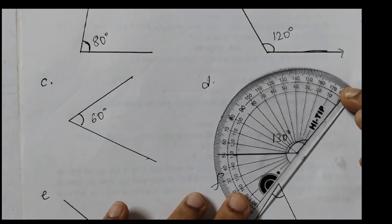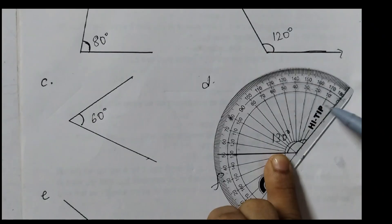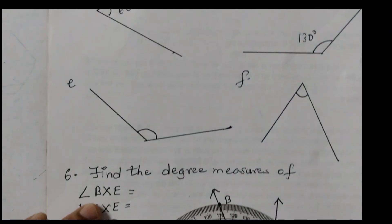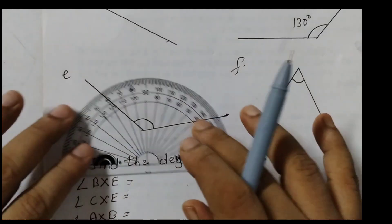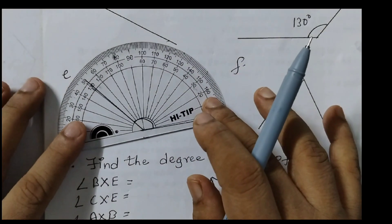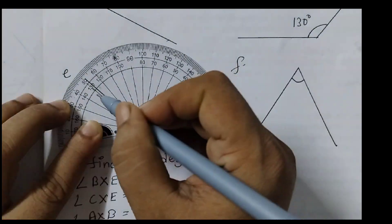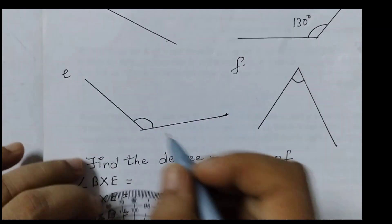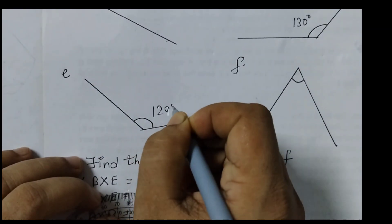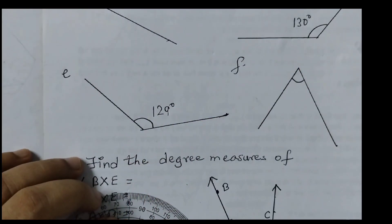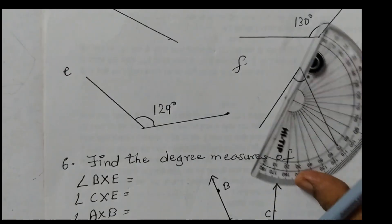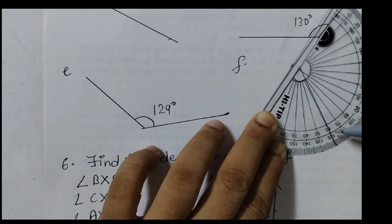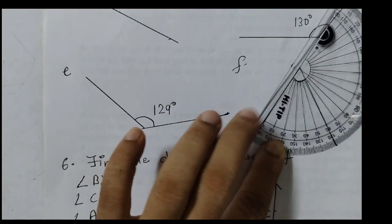Placing the protractor, we see this angle is 130 degrees — starting from 0, that's 130 degrees. The next one is closer to 130, so this is 129 degrees. And the last angle here is 60 degrees.